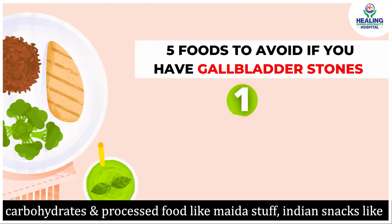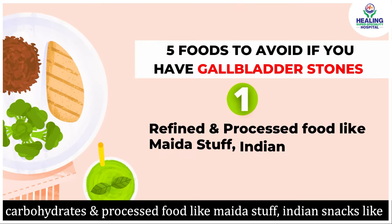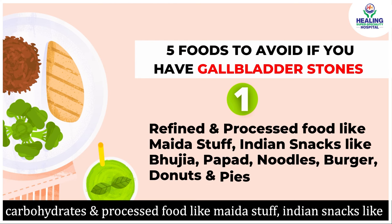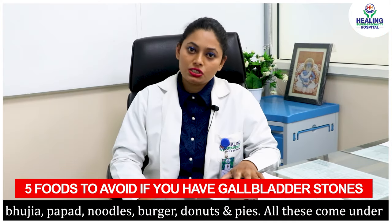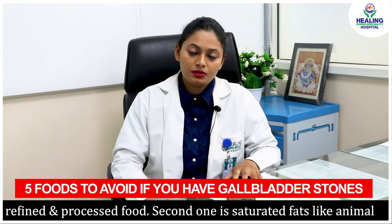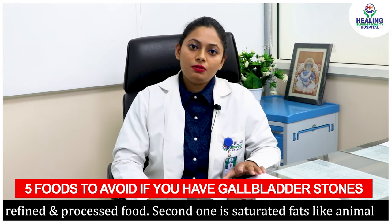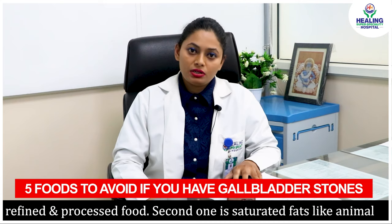Refined carbohydrates include maida-based stuff, Indian snacks like bhujiya, papad, matiya, noodles, even burger, doughnuts, pies, and cheese — all of these come under refined and processed food. The second one is saturated fat.